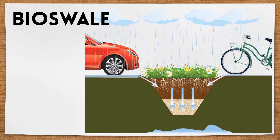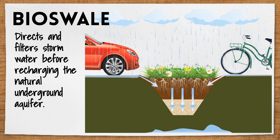A bioswale is a slightly sloped vegetated area that can direct and filter stormwater before it recharges the natural aquifer underground.